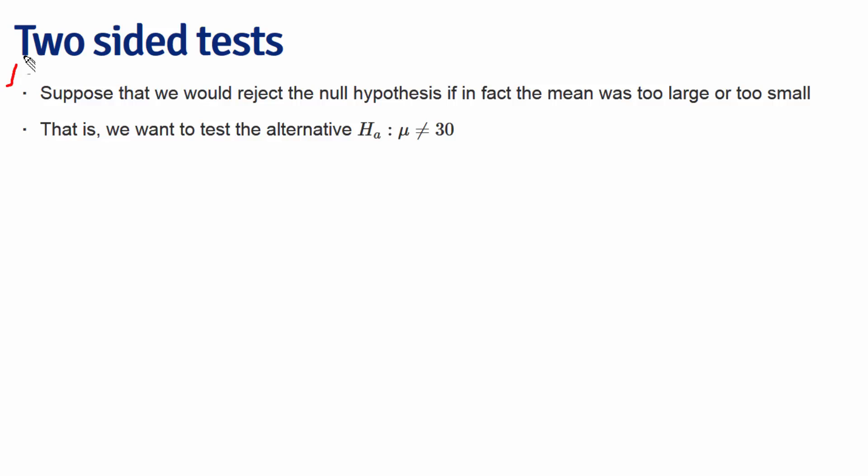So if we were to do a two-sided test, we want to reject whether or not mu is different from 30. In other words, we'll reject if our test statistic is either too large or too small. In this case, because our test statistic is positive, we only need to consider the large side.